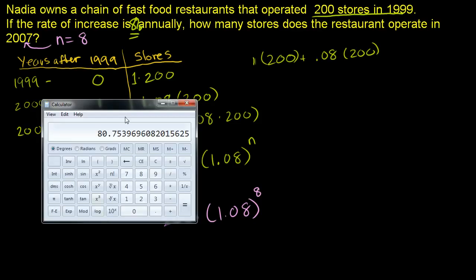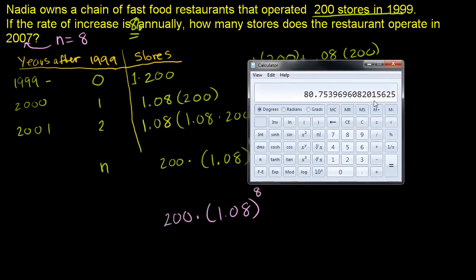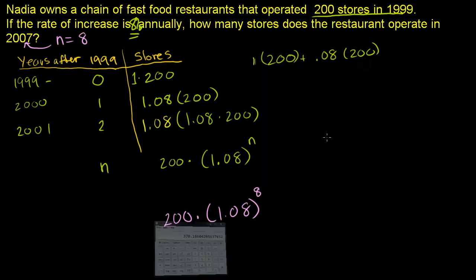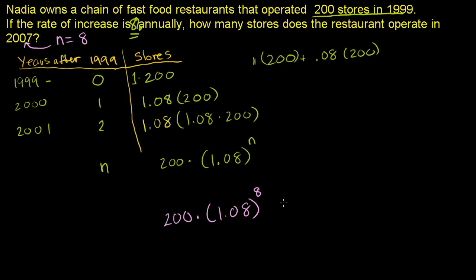Let's get our calculator out and calculate it. So we want to figure out 200 times 1.08 to the 8th power. She's going to be operating 370 restaurants, and she'll be in the process of opening a few more. So if we round it down, she's going to be operating 370 restaurants.